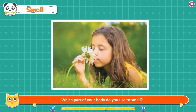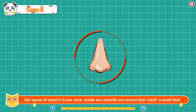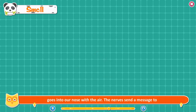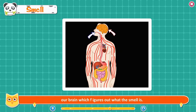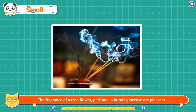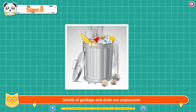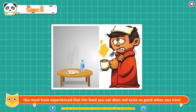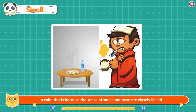Smell. Our sense of smell is in our nose. Inside our nostrils are nerves that catch a smell that goes into our nose with the air. The nerves send a message to our brain which figures out what the smell is. The fragrance of a rose flower, perfume, and burning incense are pleasant. Smells of garbage are unpleasant. Some people are allergic to some smells and start sneezing repeatedly. You must have experienced that the food you eat does not taste so good when you have a cold, because the sense of smell and taste are closely linked.